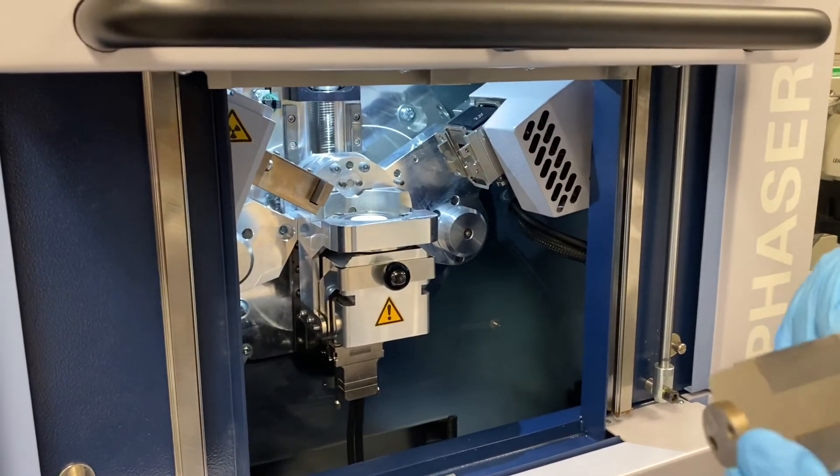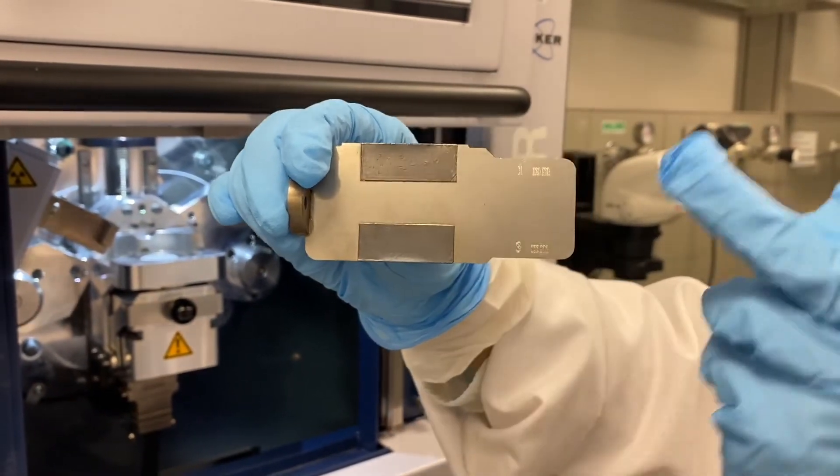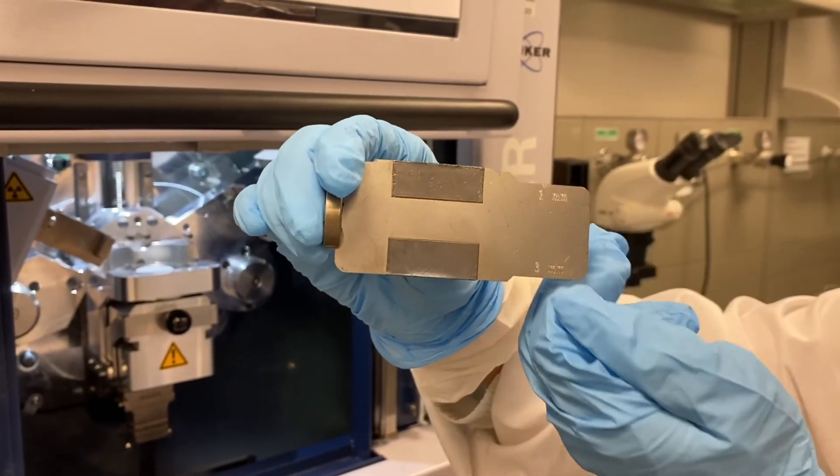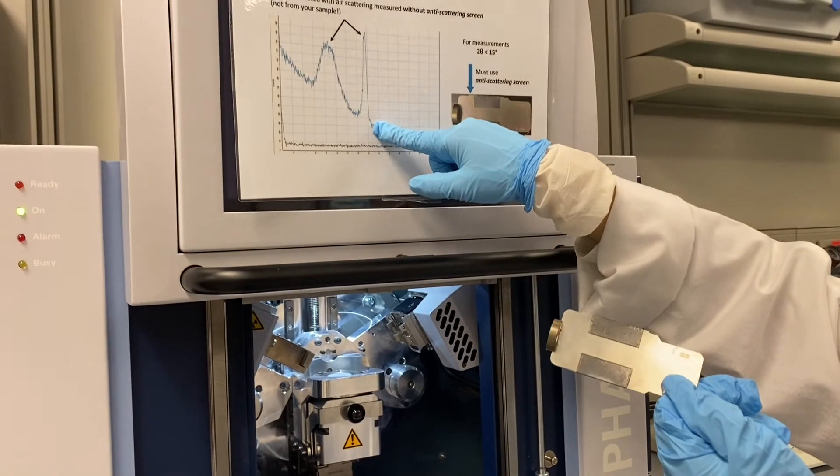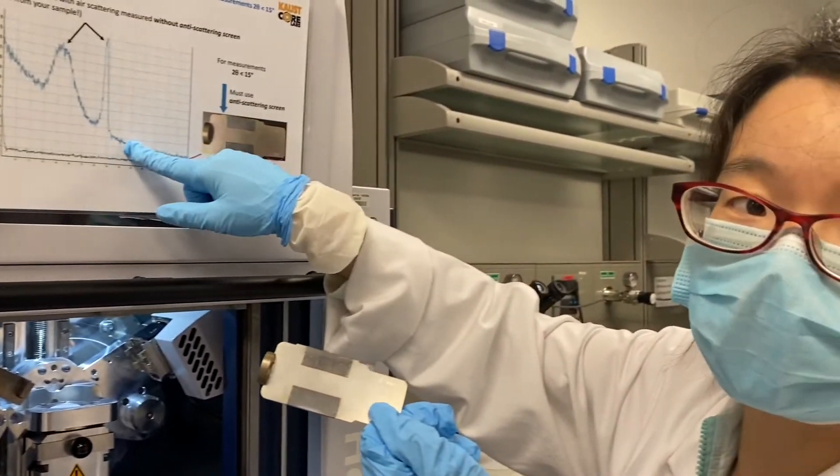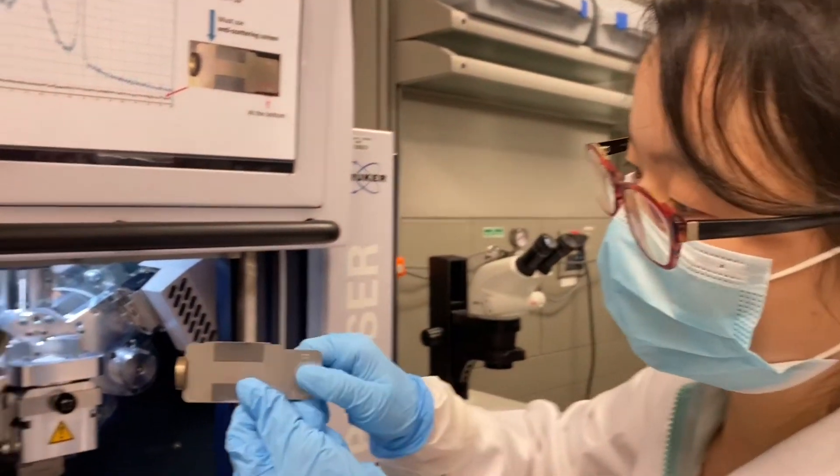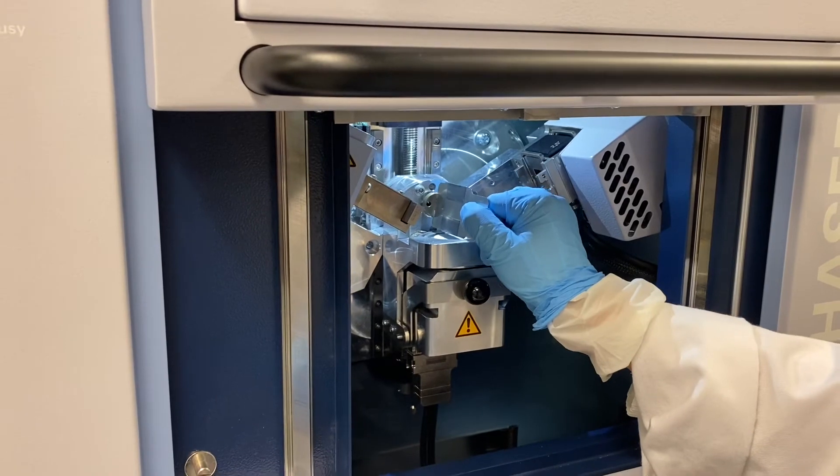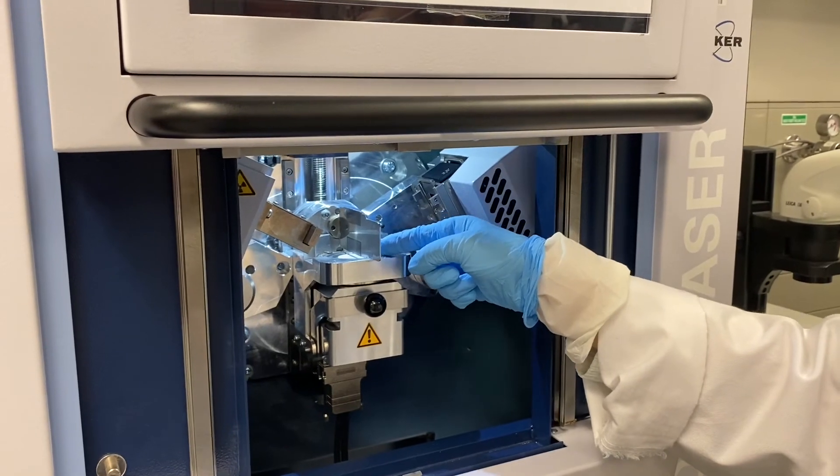And here we also have one knife edge. You can see clearly, this is 3mm and this is 1mm. Why we need to use this one? Because when you didn't use this one, we will have the peak which is not belong to your sample. So if you want to measure the sample, which the degree is below 50, you should use this one. And how to install this one? You see, there are two holes here, and you just put the right position. It's magnetic. Then the 3mm should be in the bottom.